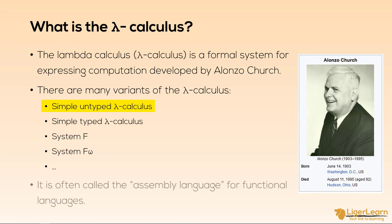It is often useful to think of the lambda calculus as a sort of assembly language for functional languages. This is because higher level functional programming languages like Haskell, OCaml, and others usually translate their source code into an intermediate form of one of the many variants of the lambda calculus. Since it underpins so much when it comes to functional languages, I think it's important that you have a rudimentary understanding of the simple lambda calculus, which will allow you to understand what is happening under the hood when you are writing code using a functional language.